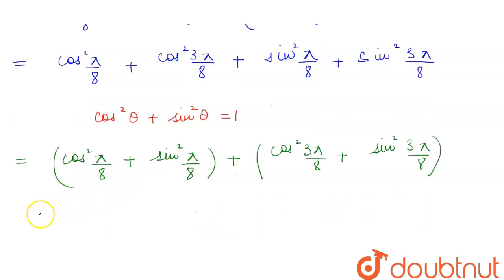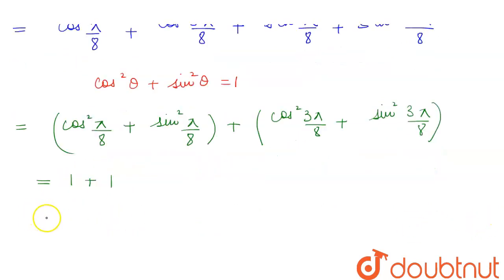Now we see that this part will become equal to 1 and similarly this will be equal to 1. So from here we get this to be equal to 2. Now this is equal to our right hand side hence we have proved our result.